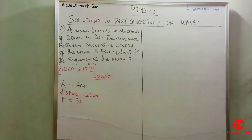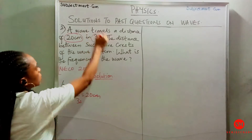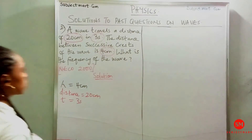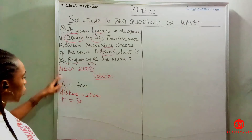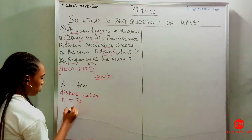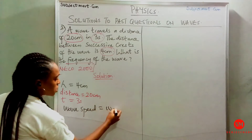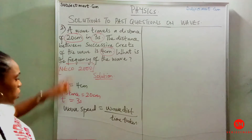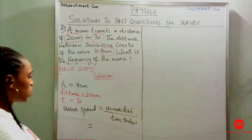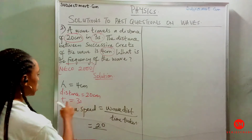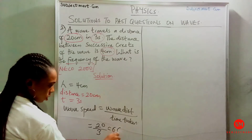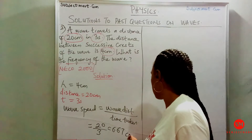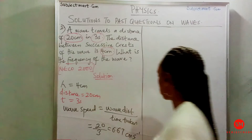The second question says the wave travels a distance in time 3 seconds. The distance between the crest and the trough — that is, the wavelength — equals 4 centimeters. They ask us to find the frequency of the wave. Recalling the formula: wave speed equals wave distance over time taken. We need to find the wave speed first: wave distance is 20, time taken is 3, giving us 6.67 meters per second — that's the wave speed.